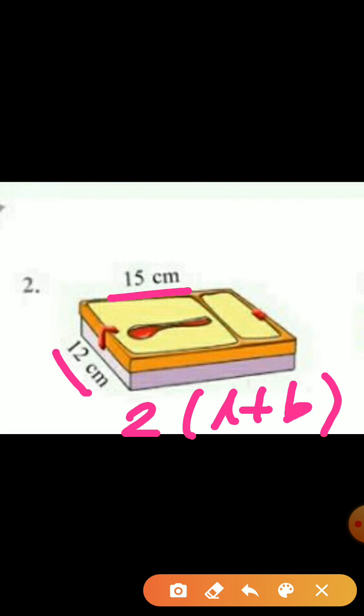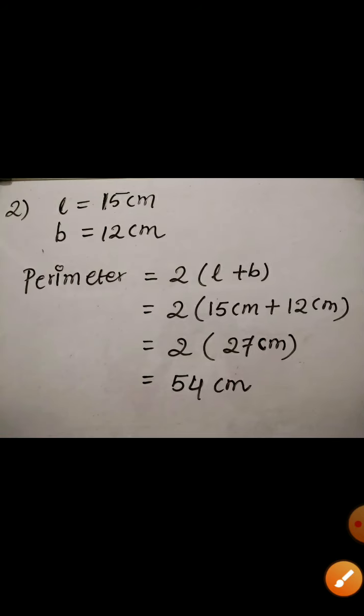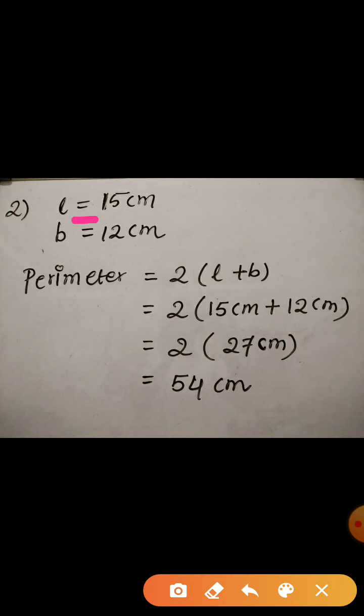We substitute the value of length and breadth in this formula and then we find out the perimeter. So here you can see how I have written. The length is given 15 cm, breadth is 12 cm. We use the formula perimeter is equal to 2 times length plus breadth.